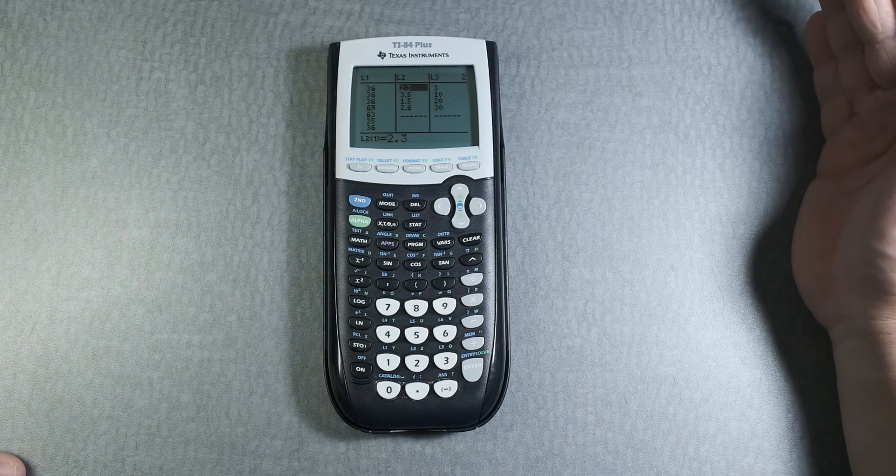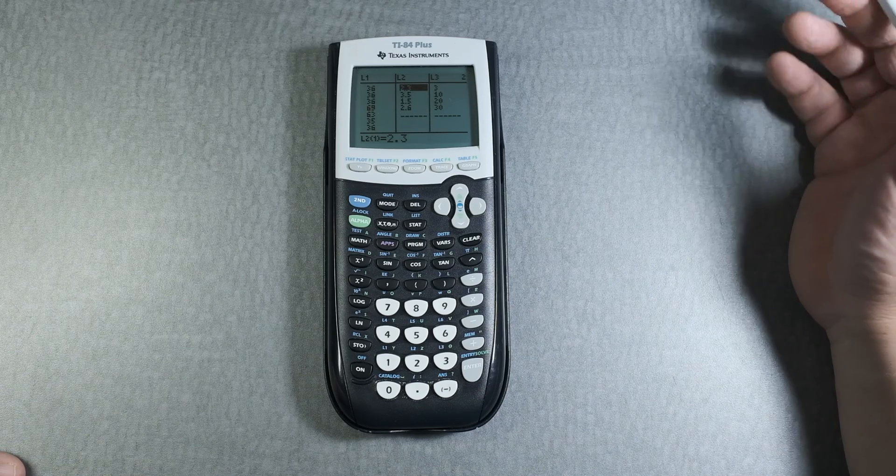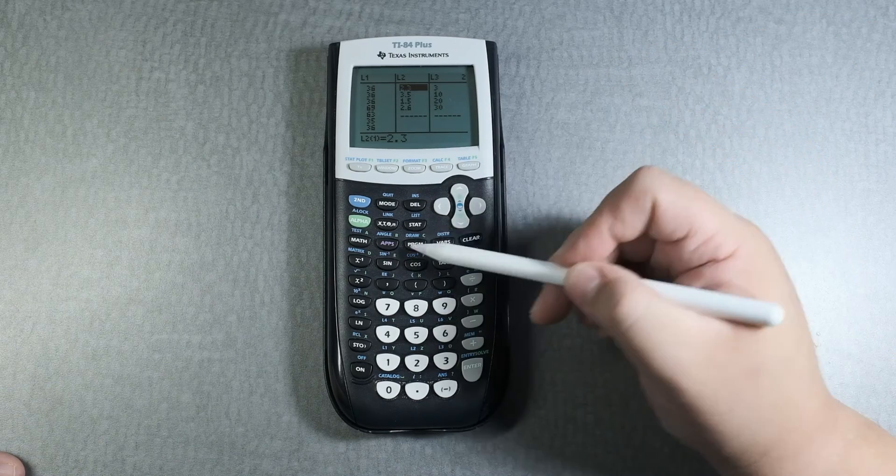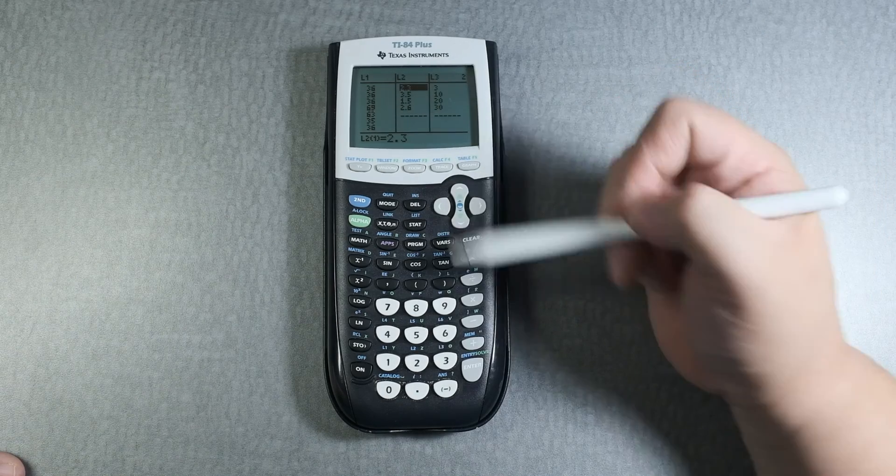That's a long process by hand but in the calculator it's going to be straightforward. So after you type in your information you're in list 2 and 3. You got to remember that and list 3 is the frequency.